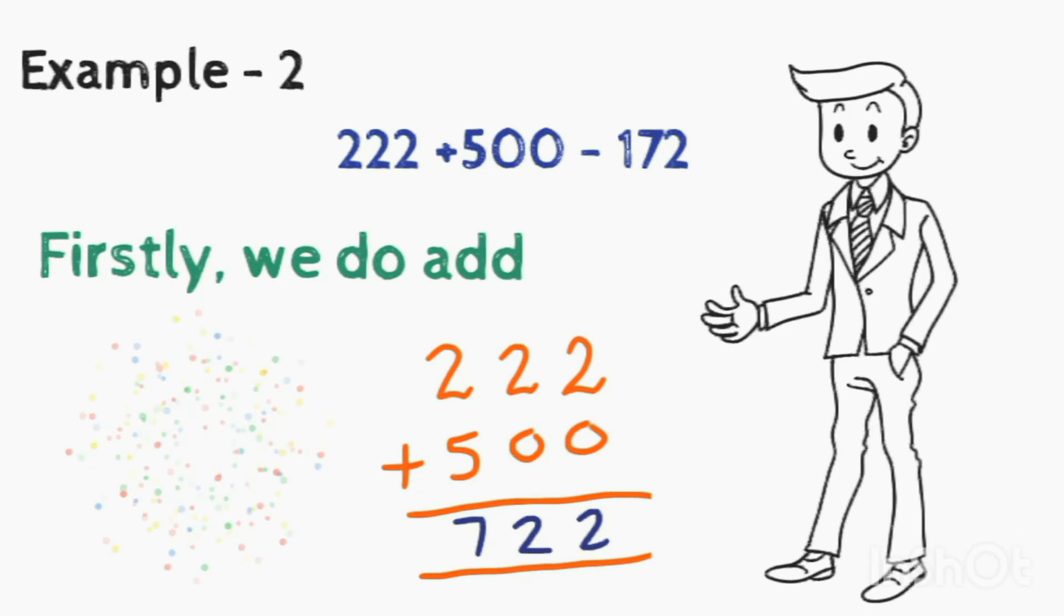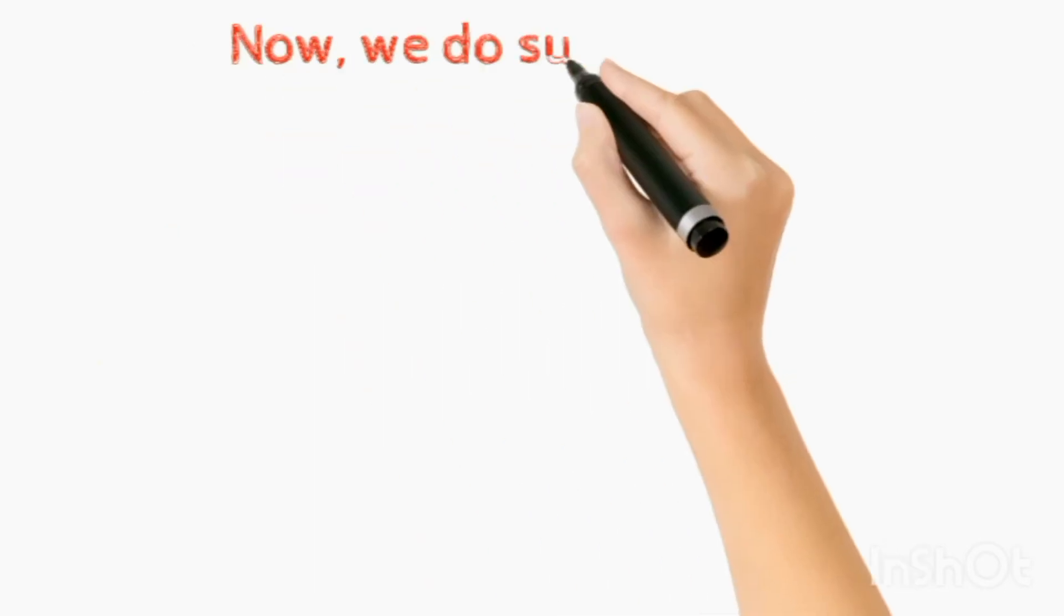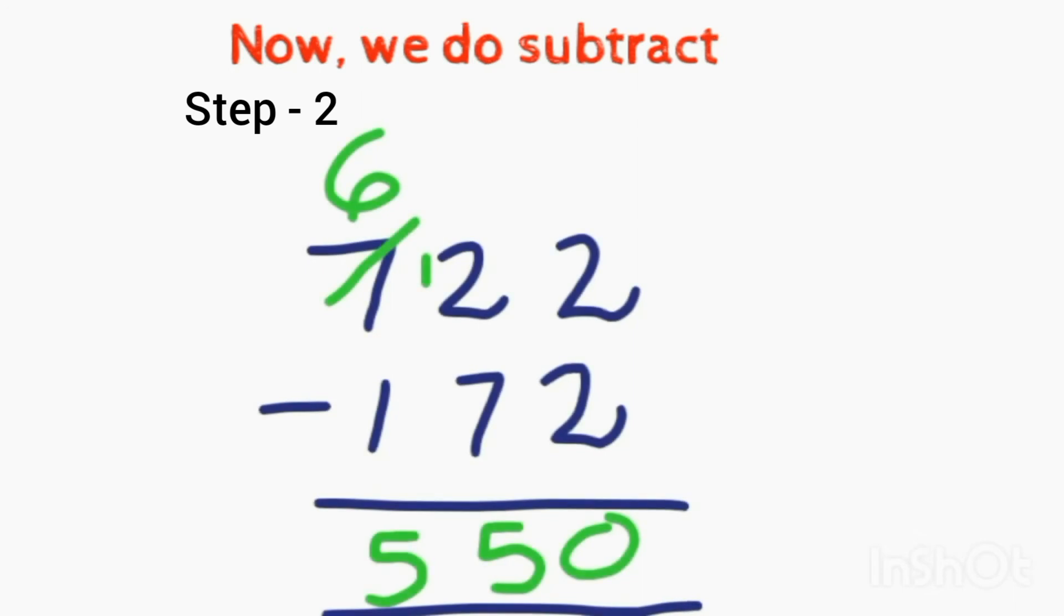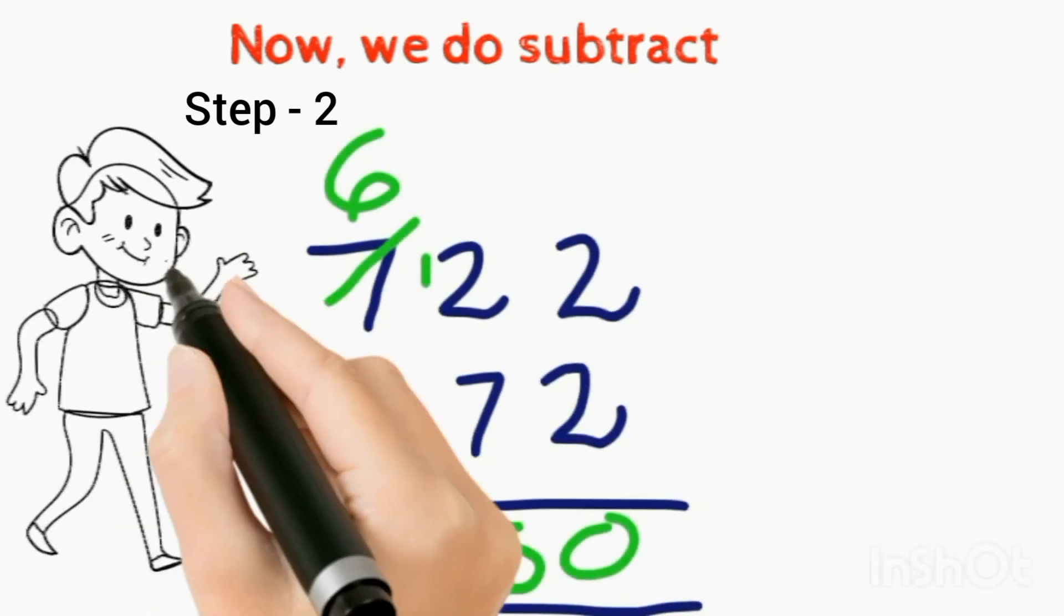Now we do subtract: 2 minus 2 is 0, 12 minus 7 is 5, and 6 minus 1 is 5.